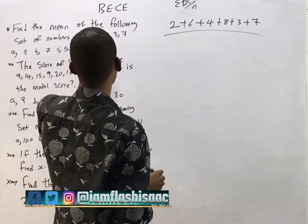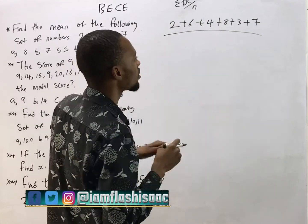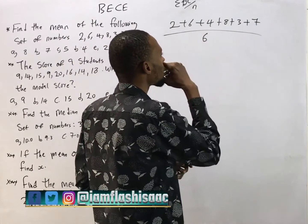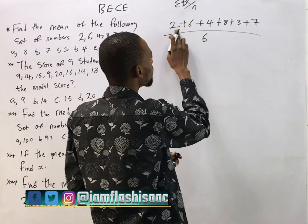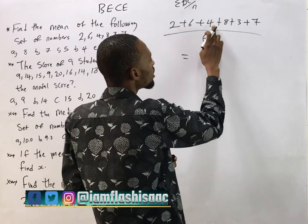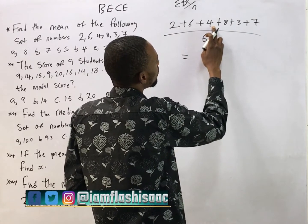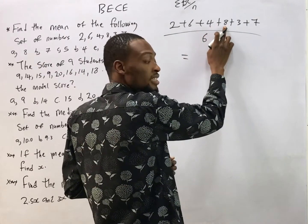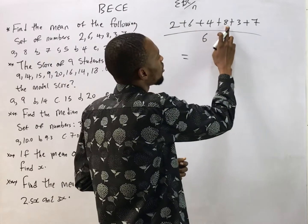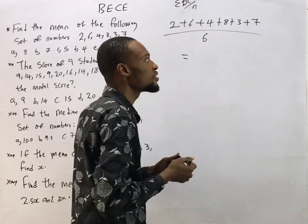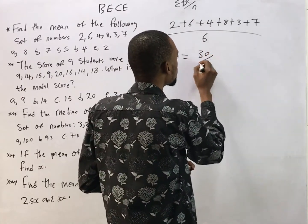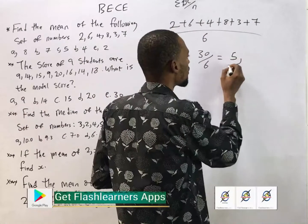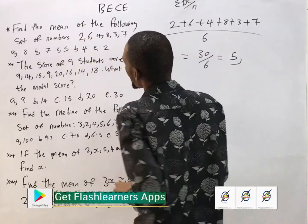Counting: one, two, three, four, five, six — so there are six numbers. Adding them: 6 plus 2 is 8, 8 plus 4 is 12, 12 plus 8 is 20, 20 plus 3 is 23, 23 plus 7 is 30. So this is 30 over 6, and 30 over 6 is 5.